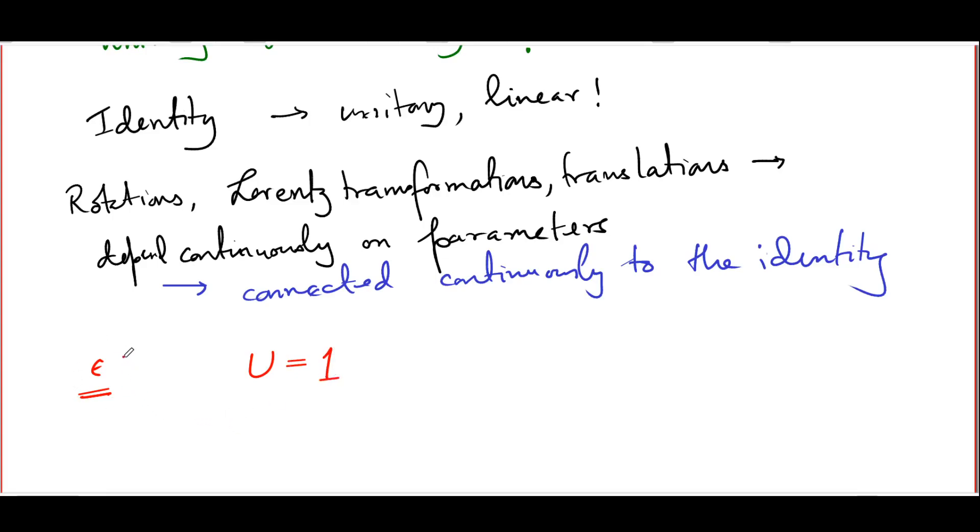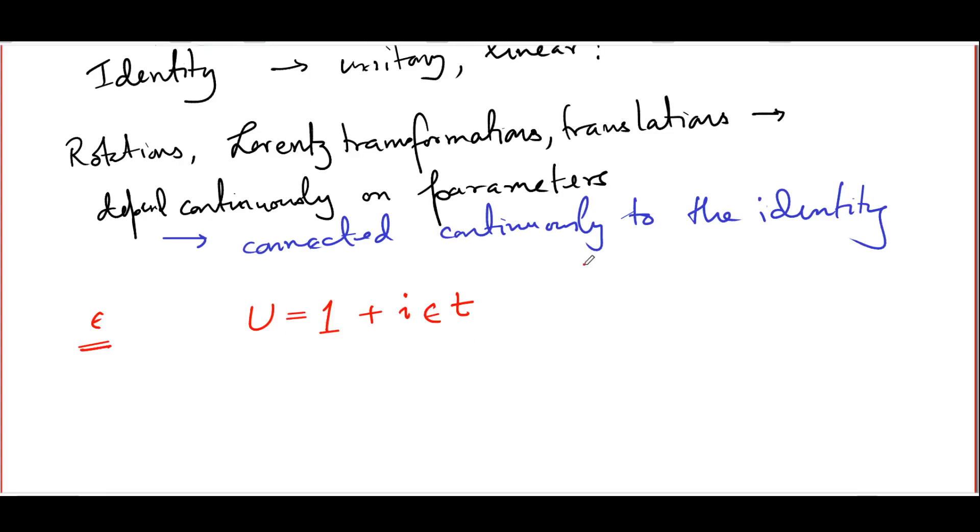If epsilon were exactly zero, we would be at the identity transformation. So then the u would have to be the identity operator. This one here is not the number one. It is essentially the identity operator. Now, when the parameter deviates infinitesimally from zero and takes the value of epsilon which is infinitesimally small, we would expect u to deviate infinitesimally from the identity. And basically, what you get is something which looks like this. T here is an operator. The i has been thrown in for convenience. In fact, the convenience is pretty easy to see.